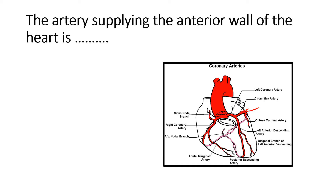The left anterior descending artery has small branches known as diagonal branches. The left main coronary artery also gives rise to the left circumflex artery, which goes to the left side and passes behind. When the left circumflex divides, its branch is known as the obtuse marginal artery.